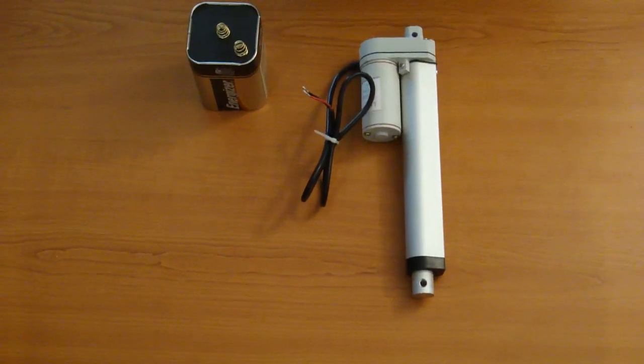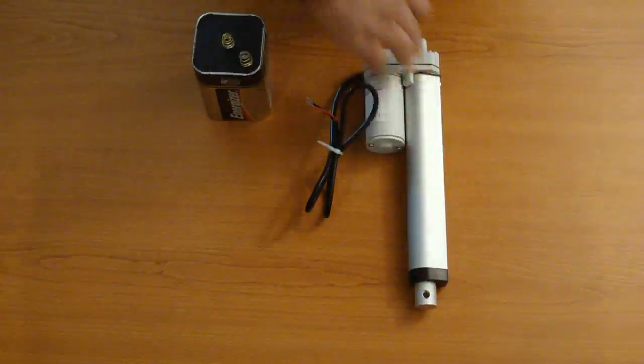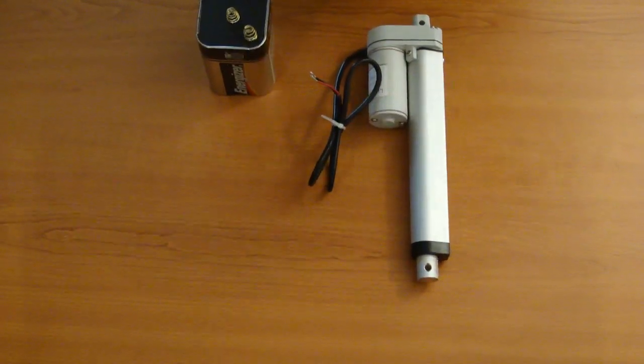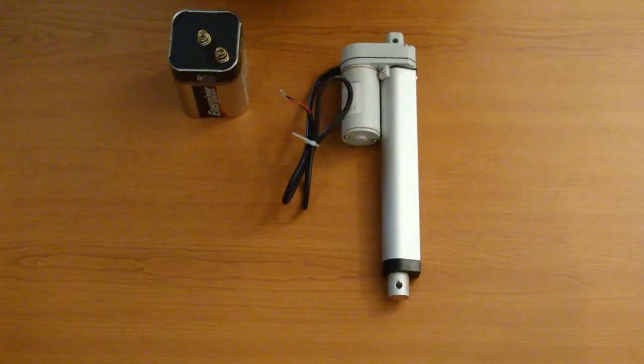This is our 6 inch mini linear actuator here at Progressive Automations. As you can see, we have a hole on each side of these. We will be shortly having brackets that you can use to mount these to different objects and devices.